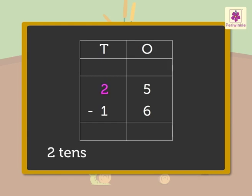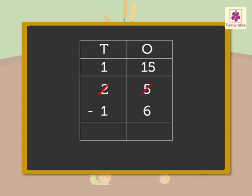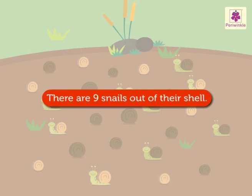So, we get two tens is equal to one ten plus ten ones. We add the ten ones and the five ones to get 15 ones. Subtract: 15 minus 6 is equal to nine ones. Now, subtract: 1 minus 1 is equal to zero tens. So, we get the answer as nine. Thus, there are nine snails out of their shell.